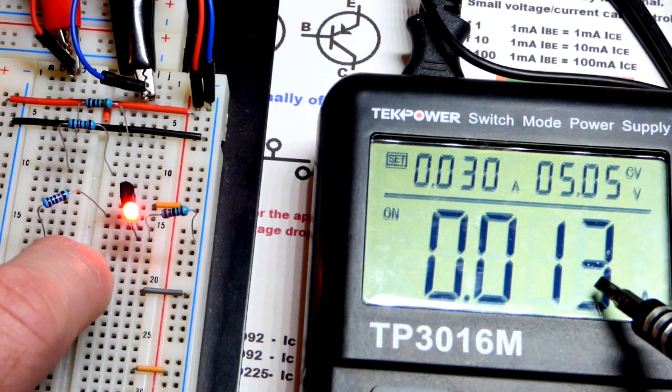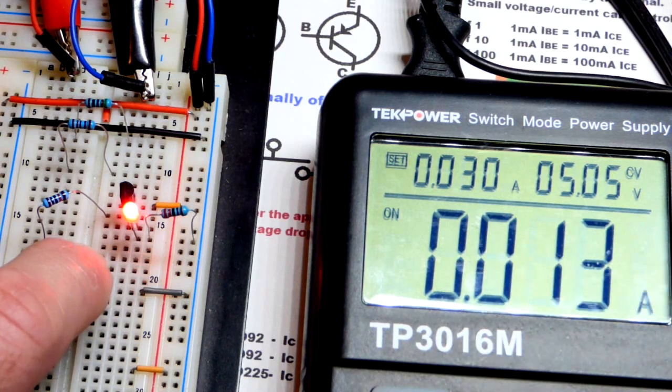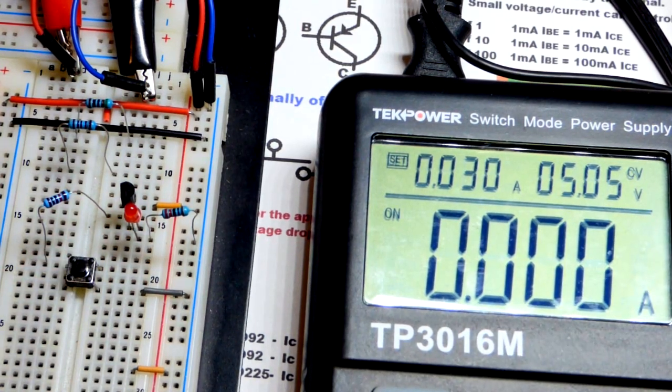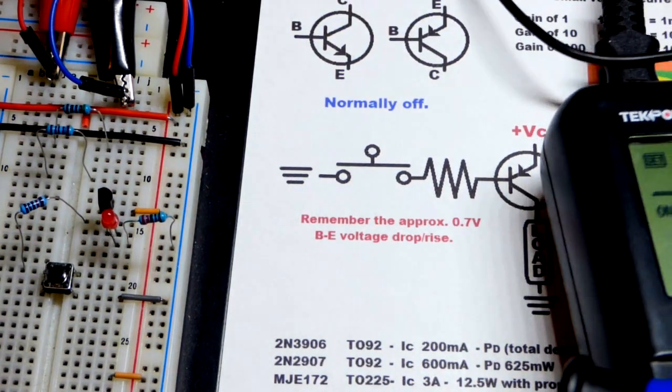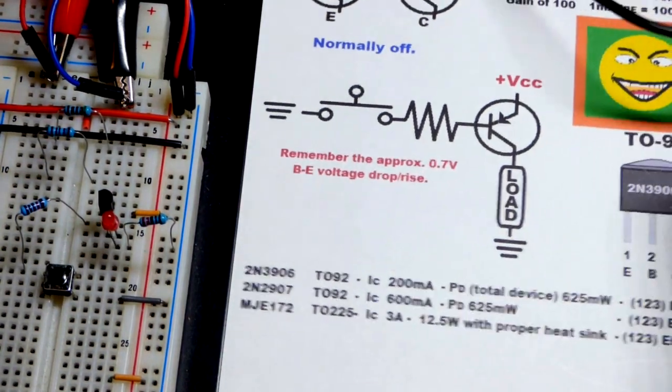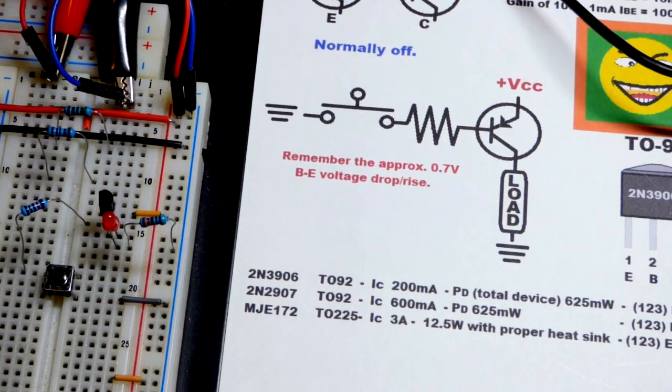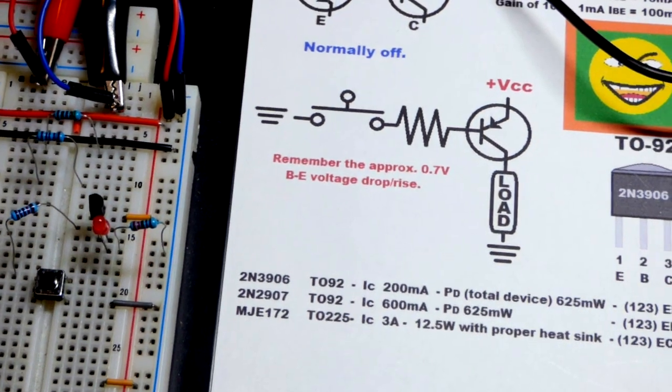As you can see there, if we got one milliamp, it would take 10, 100, 1,000 to equal one amp. We are using the 2N3906 because we are lighting an LED. We can get the collector 200 milliamps of current. And you may see a negative symbol before the 200 milliamps when you're looking at a data sheet to indicate that current is going the opposite direction of an NPN transistor.